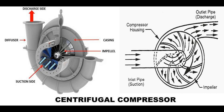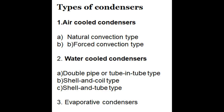Types of condensers include: 1) air cooled condensers — A) natural convection type and B) forced convection type; 2) water cooled condensers — A) double pipe or tube-in-tube type, B) shell and coil type, C) shell and tube type; and 3) evaporative condensers.